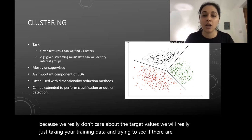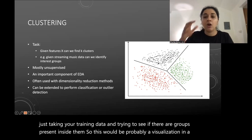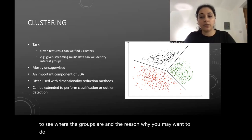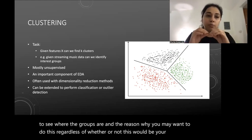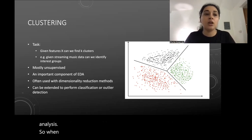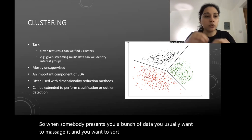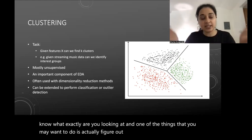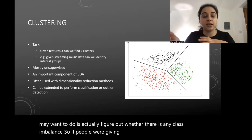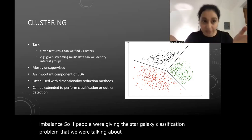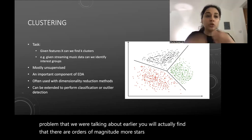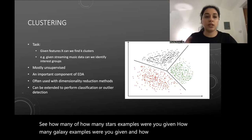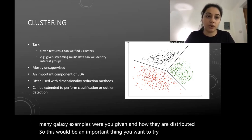You might visualize clusters in a 2D plane, slicing up the dataset to see where groups are. This is important in exploratory data analysis — when someone presents you data you want to massage it and see what you're looking at. One important thing to check is class imbalance: in the star-galaxy classification problem, there are orders of magnitude more stars than galaxies. You want to see how many star examples versus galaxy examples you were given and how they are distributed.